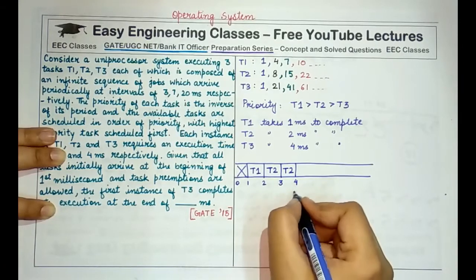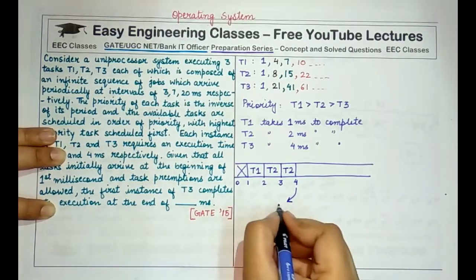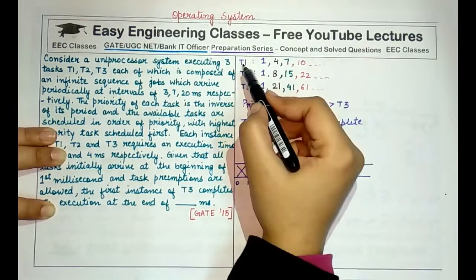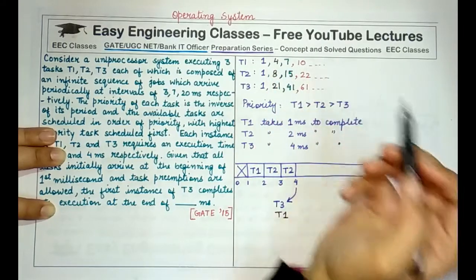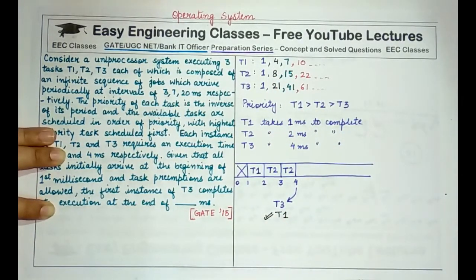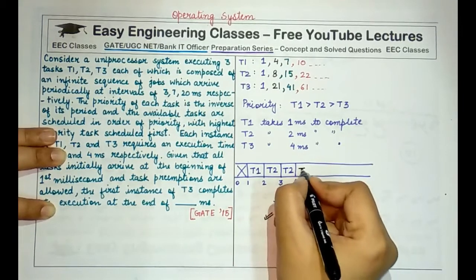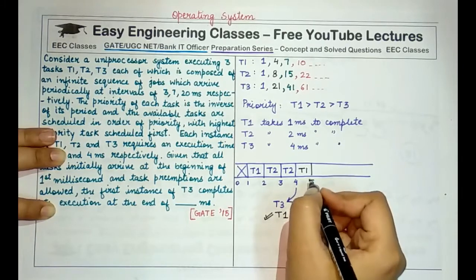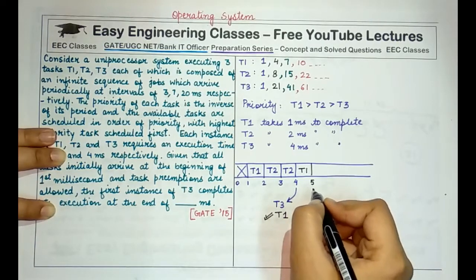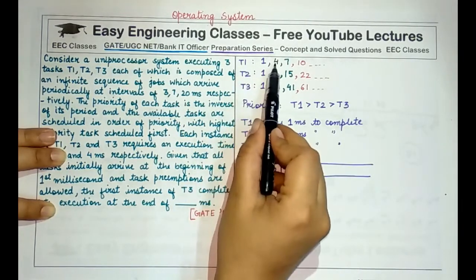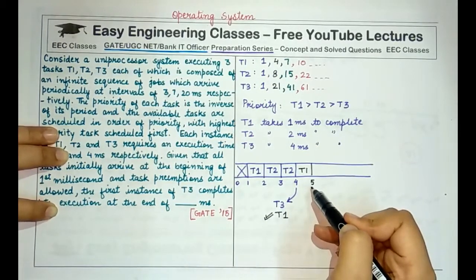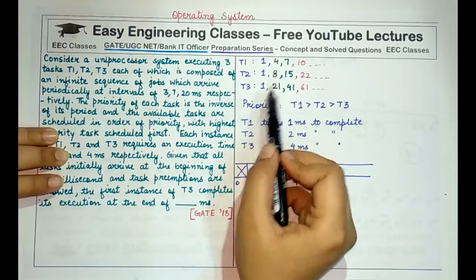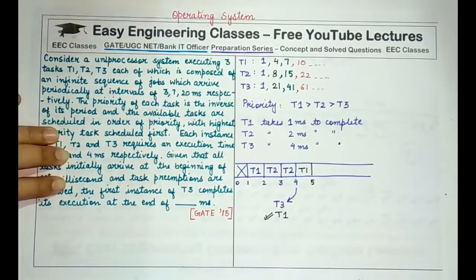At 4 milliseconds, the first instance of T3 is available and the second instance of T1 also arrives. Since T1 has higher priority than T3, we schedule T1. The second instance of T1 completes in 1 millisecond, finishing at 5 milliseconds. At 5 milliseconds, T2's second instance is not yet present — it arrives at 8 milliseconds — so we start executing the first instance of T3.